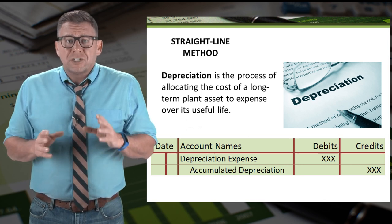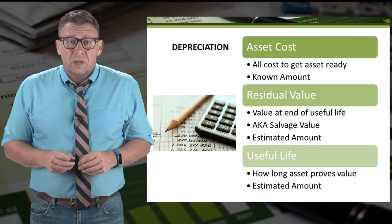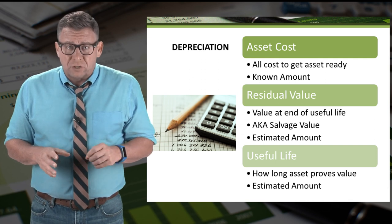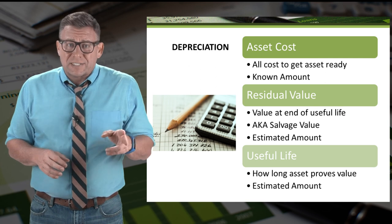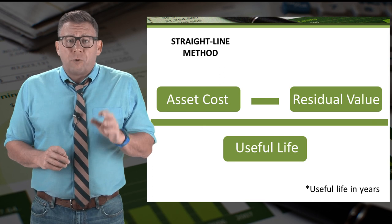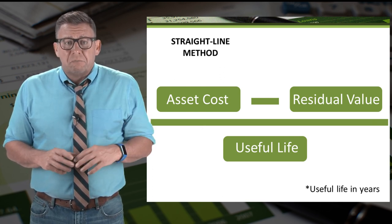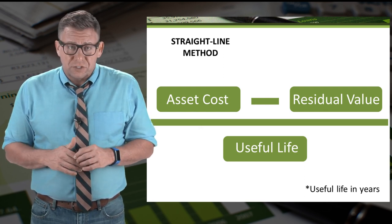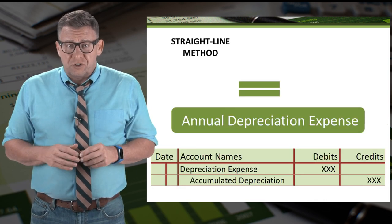In this video, let's learn how to calculate depreciation expense with the straight-line method. In order to calculate depreciation expense, we need three values: one is known — asset cost — and the other two are estimated — residual value and useful life. The formula for the straight-line method is asset cost minus residual value, divided by useful life in years. That result equals the amount of annual depreciation expense.